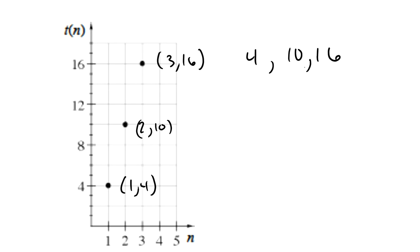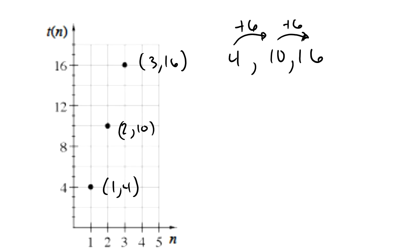So as I look at this, this sequence is increasing by 6 each time, right? My generator is plus 6, plus 6. So this is linear. It's not an exponential function or geometric.